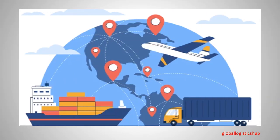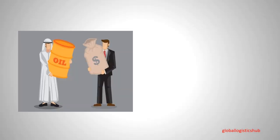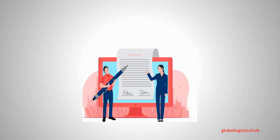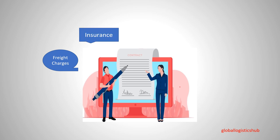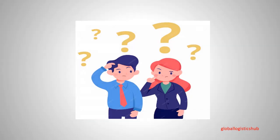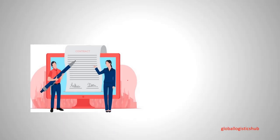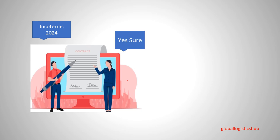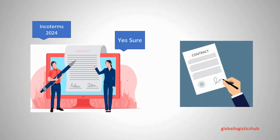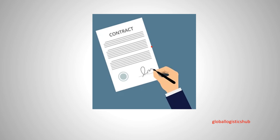Why do we use Incoterms? Incoterms hold universal meaning around the world. People use Incoterms to avoid misunderstandings in foreign trade contracts by clarifying the tasks, costs, and risks. If parties want Incoterms 2024 rules to apply to their contract, the safest way is to clearly mention it in the contract — for example, CIF India Incoterms 2024.